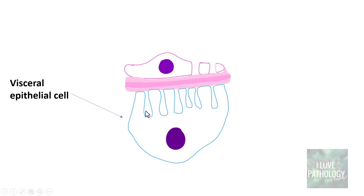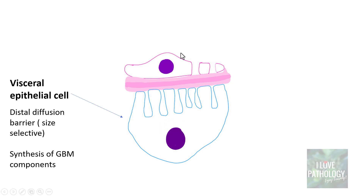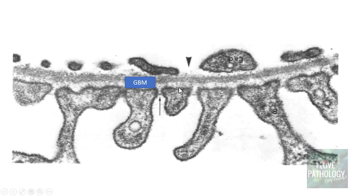The other cell is the visceral epithelial cell. The most important function of the visceral epithelial cell is synthesis of glomerular basement membrane components. This is a diffusion barrier which is size selective. Note that this visceral epithelial cell, because of these foot processes, has filtration slits. This is the ultrastructural image of the glomerular filtration barrier. These are the fenestrated endothelial cells and that is the glomerular basement membrane. Note that this basement membrane has a central lamina densa, which is more dense, and the peripheral lamina rara interna and then lamina rara externa.